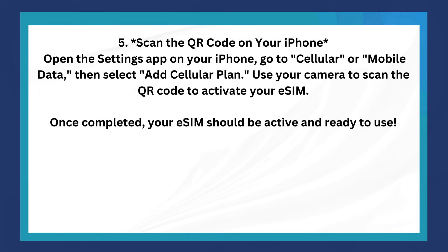Open the Settings app on your iPhone, go to Cellular or Mobile Data, and then select a cellular plan. Use your camera to scan the QR code to activate your eSIM.